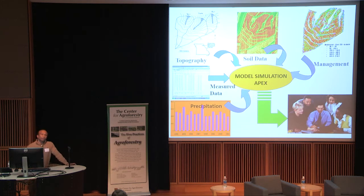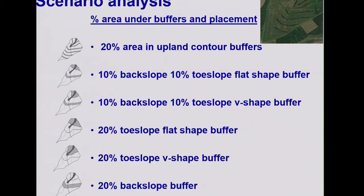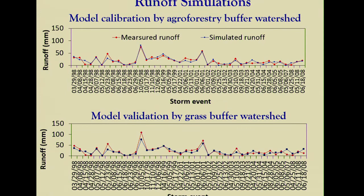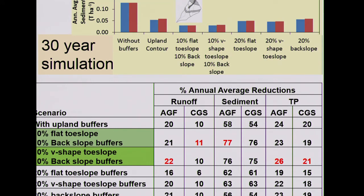We don't yet know the future of these management practices, so we did modeling work using topography and soil management data. We looked at six different scenarios — 10 percent buffers here and there, V-shape, all buffers near the riparian system, and different shapes. We performed calibration and validation with very good performance statistics. The results show that placing buffers at the edge of the watershed near the stream and in the middle provides the most effective reduction in losses of runoff, sediment, and total phosphorus. This was a 30-year simulation study.